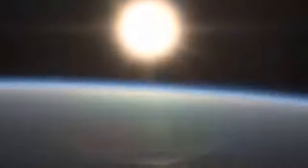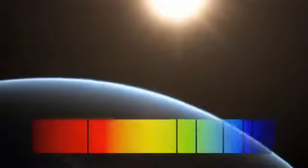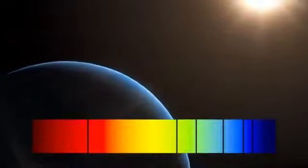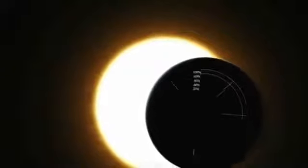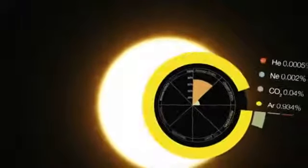As a star's light passes through an exoplanet's atmosphere, the chemical signature of the atmosphere is imprinted on the light as dark lines in its spectrum. These lines tell scientists precisely what gases are present in the planet's atmosphere.